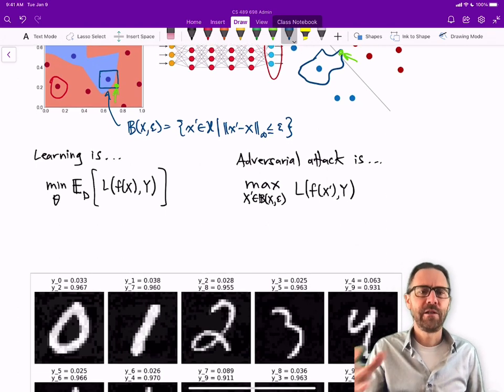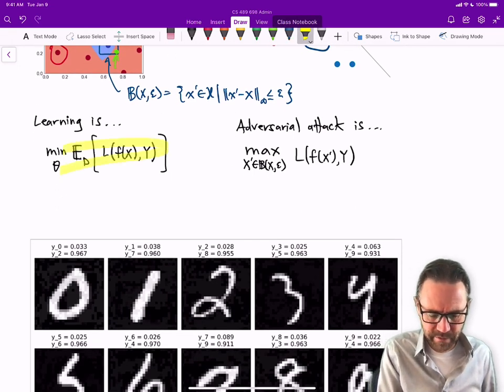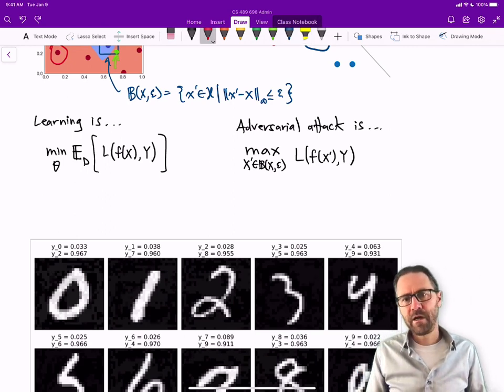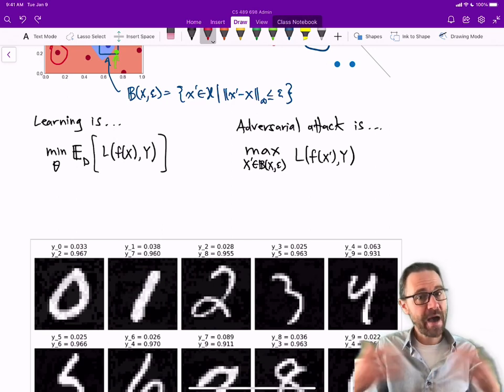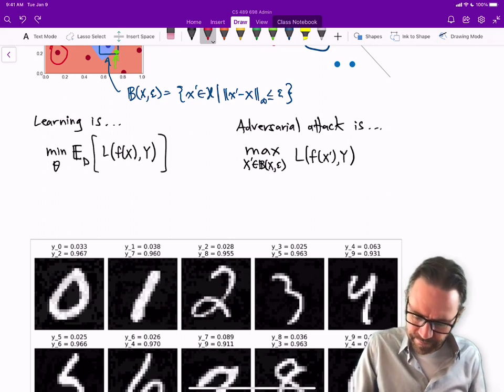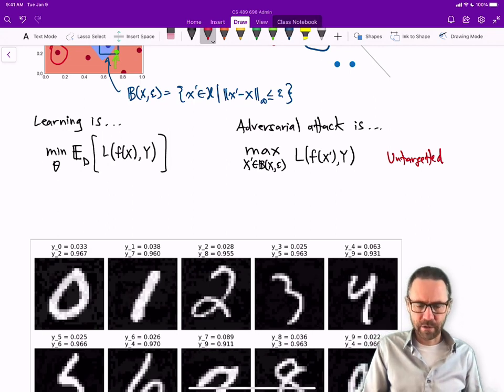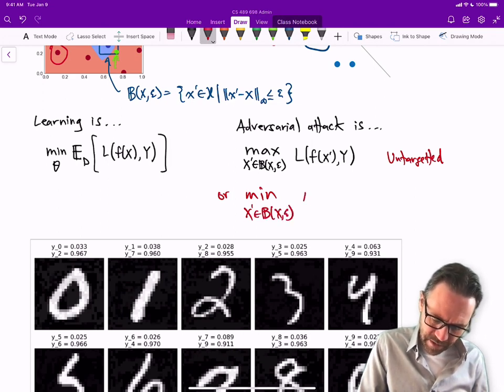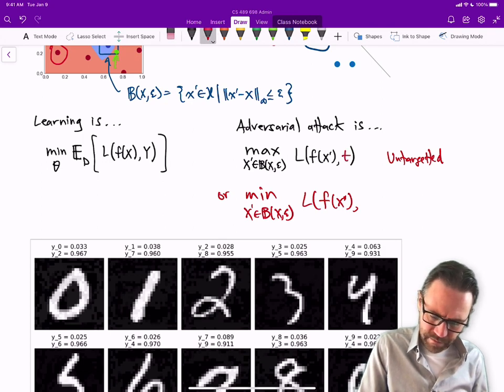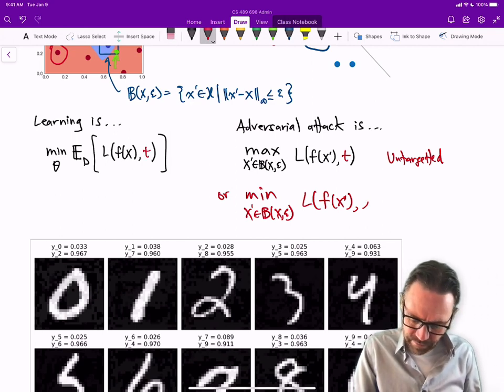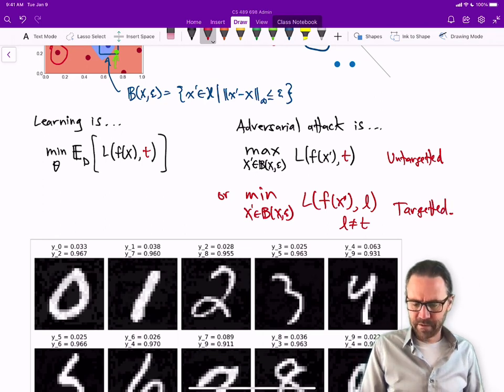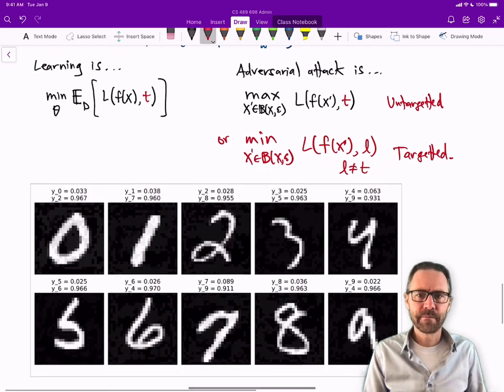The problem seems to be that many points are not too far away from the decision boundary. Learning is the act of minimizing the expected loss over our dataset. An adversarial attack—there are two kinds. There's the untargeted which is maximizing the loss for that given target, or if you like, minimizing the loss for the wrong target. This is targeted, pulling it towards the wrong target, the wrong class.